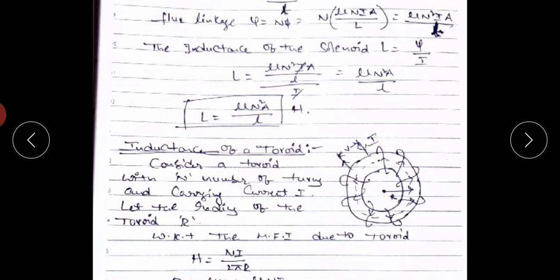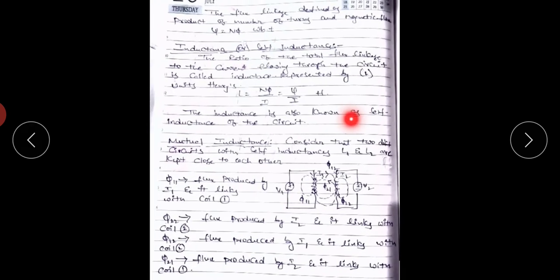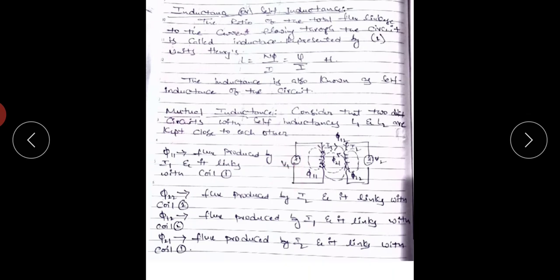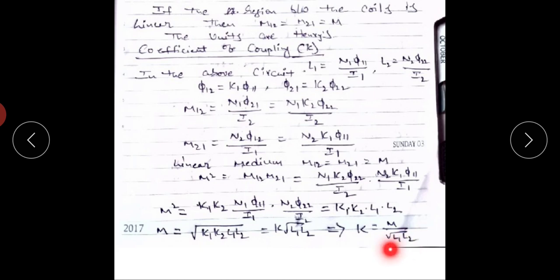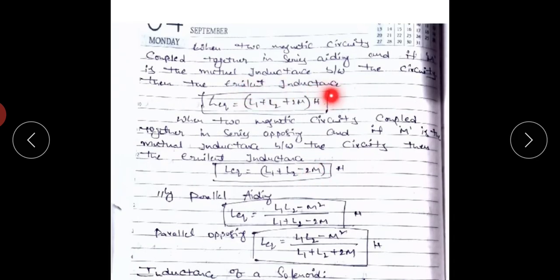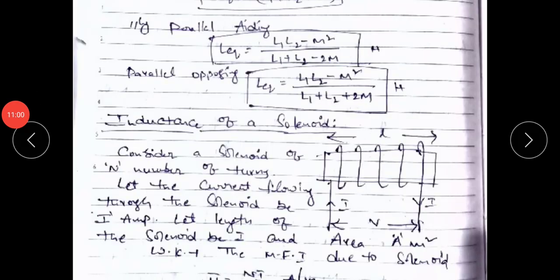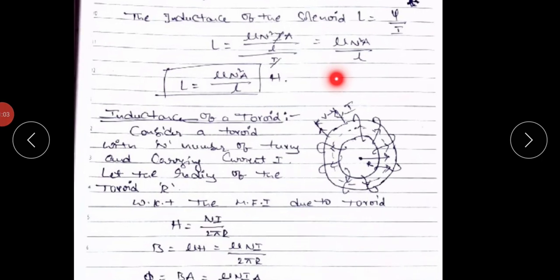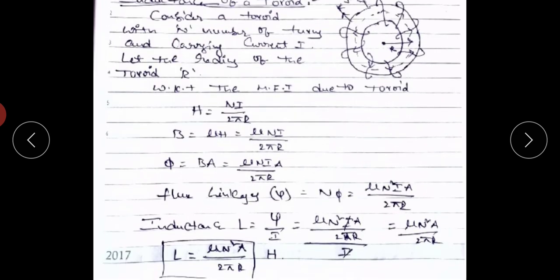To summarize: the self-inductance of a solenoid equals μ·N²·A divided by l, and the inductance of a toroid equals μ·N²·A divided by 2πr, both in Henrys. Inductance formula: ψ divided by I. Mutual inductance is flux linkages of one circuit divided by current in the other circuit — M12 and M21 — in Henrys. Coefficient of coupling K equals M divided by root of L1·L2. The four equivalent inductance connection formulas were also covered.